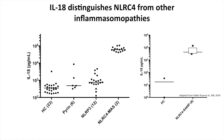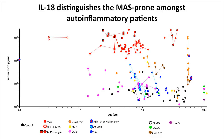Looking at IL-18 across a brutally broad autoinflammatory cohort — which we're fortunate to have at the NIH — if you draw a line on a log scale, those who are red have or have had MAS. They're up here at close to 100,000 picograms per ml of IL-18. Everyone else in the autoinflammatory world is down here, either in the normal range or what I call the bland range. We also have a few patients with FHL, malignancy-associated HLH, and primary HLH.